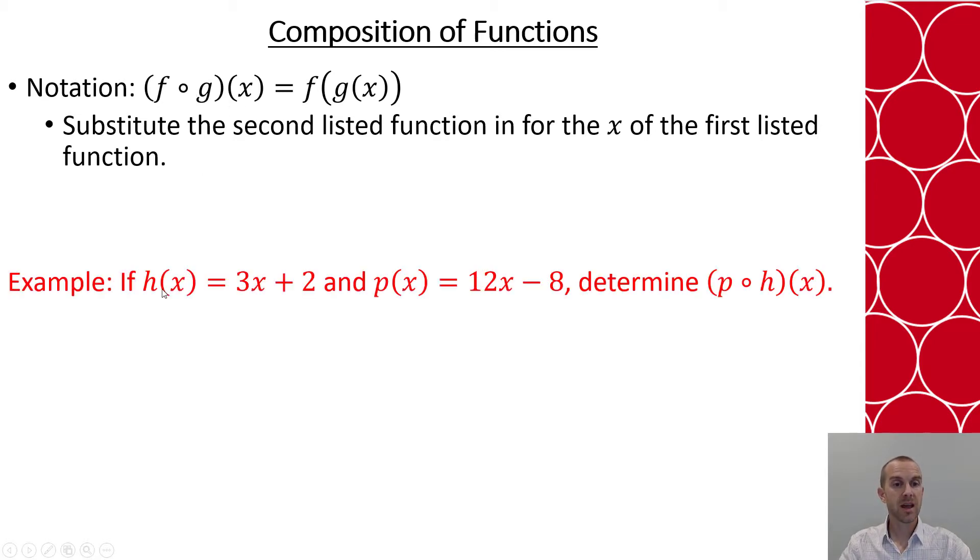So say I had h(x) = 3x + 2. p(x) = 12x - 8. And I want to do p of h of x. That means I'm going to take my h(x) expression and substitute it in for my x's in my p of x. So I'm looking at 3x + 2 being substituted in for x.